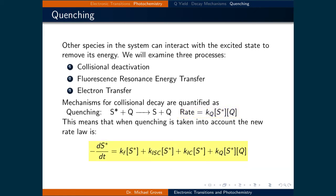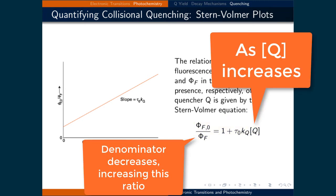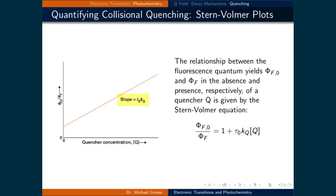When quenching is taken into account, the new rate law for the decay of S* is Kf·[S*] + Kisc·[S*] + Kic·[S*] + Kq·[S*]·[Q]. The relationship between the fluorescence quantum yields without a quencher (Φf°) and with a quencher (Φf) is given by the Stern-Volmer equation: Φf° / Φf = 1 + τ₀ · Kq · [Q]. When increasing the concentration of the quencher, Φf goes down, meaning the ratio Φf°/Φf gets larger. The slope of these plots is equal to τ₀ · Kq, the rate constant of the quenching process. These plots can be used to determine one of these parameters if the other is already known.